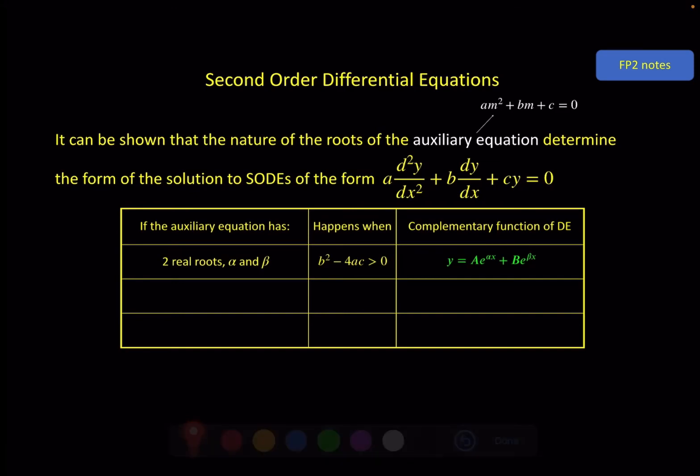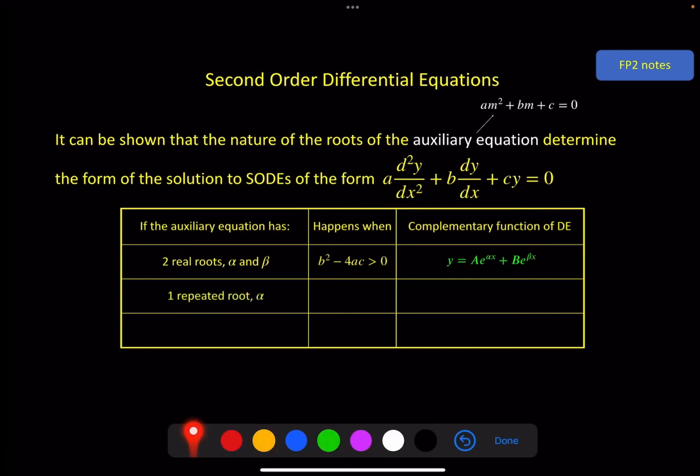In that case as we saw we have this solution y = Ae^(αx) + Be^(βx). α and β are different, we've got two different terms here, everything's fine.